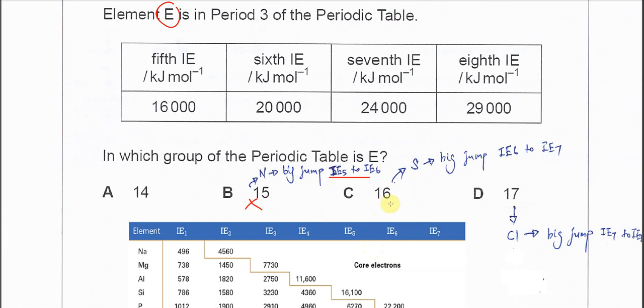For option C, there should be a big jump between the sixth and seventh ionization energy. Since there's also no big jump between the sixth and seventh IE, it's not group 16.